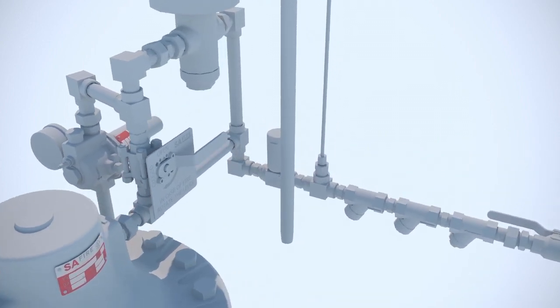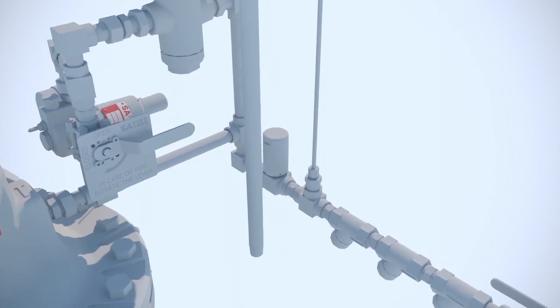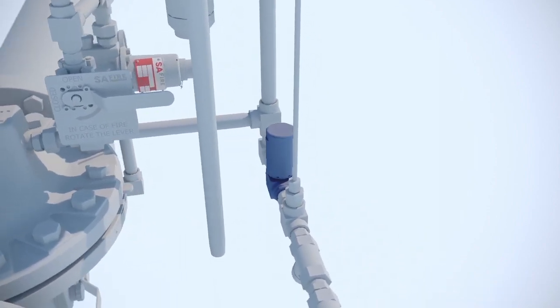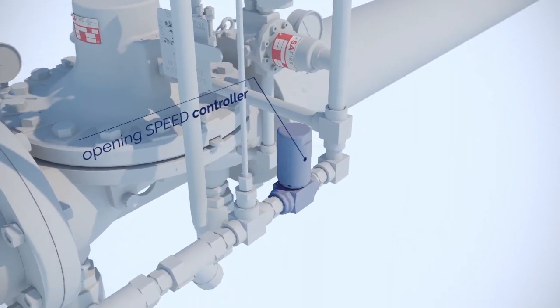It's also possible to install on the trim a valve closing speed control device to modulate the flow of water and avoid water hammers in the pipes.